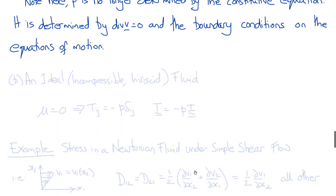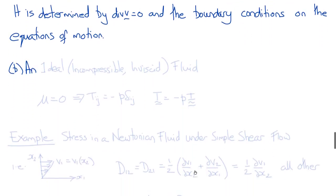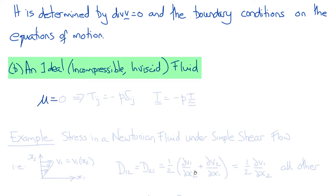Another special case is the ideal fluid, which means it is both incompressible and inviscid. Inviscid means the viscosity is zero, so the constitutive equation reduces to T_ij equals minus p delta_ij, or T equals minus p I.